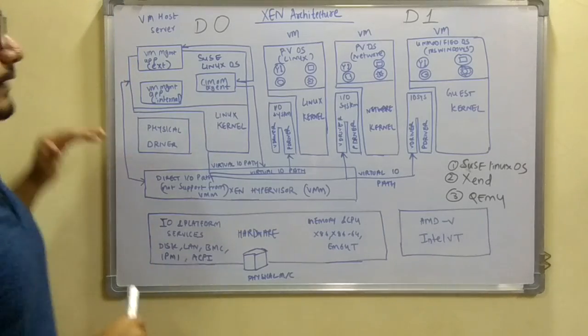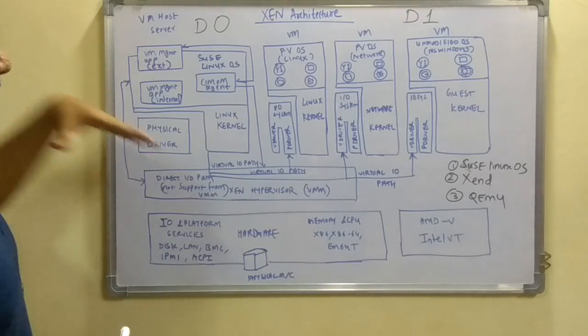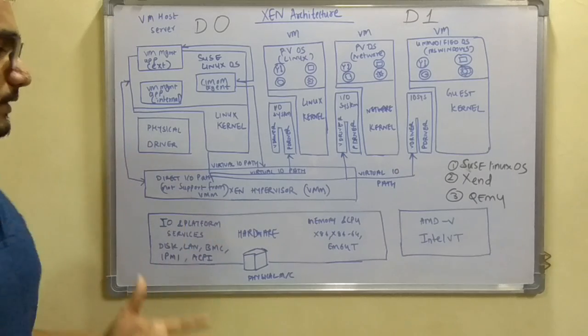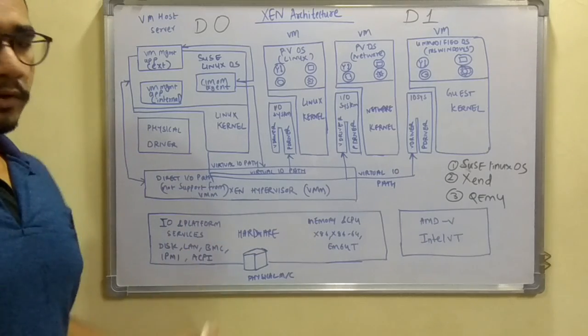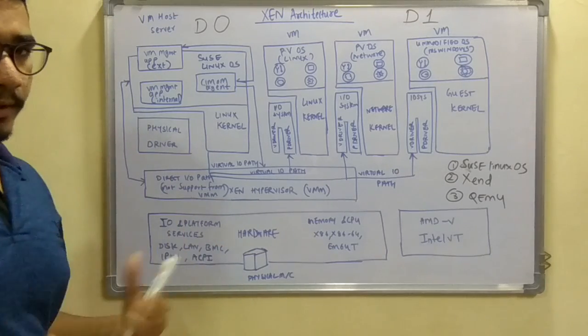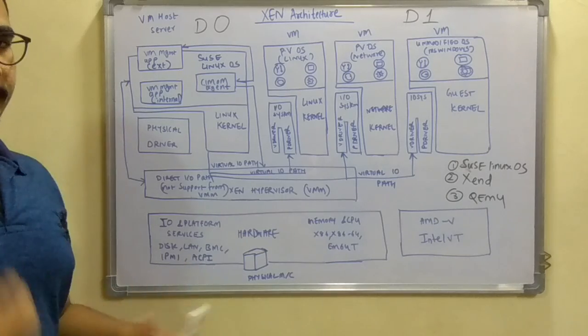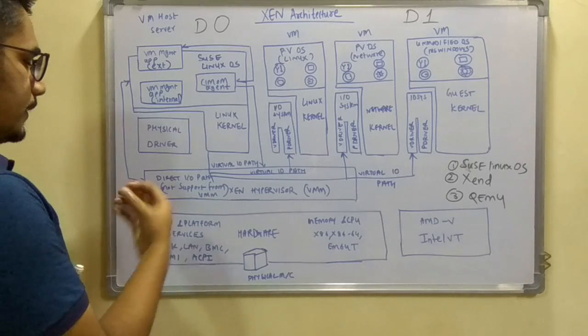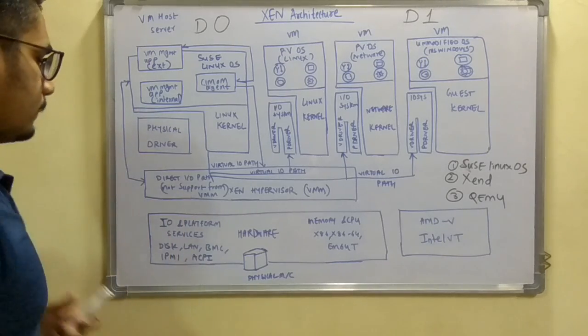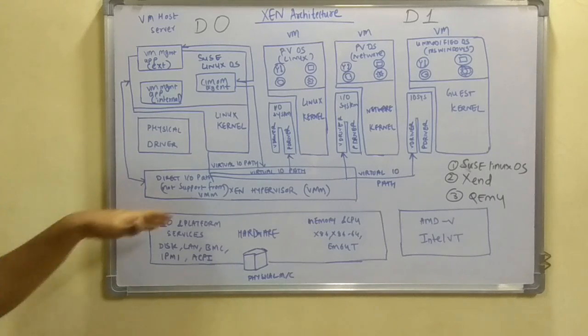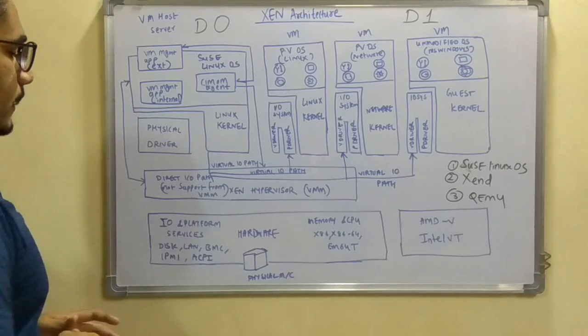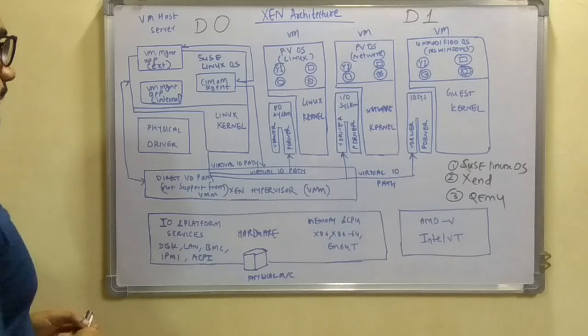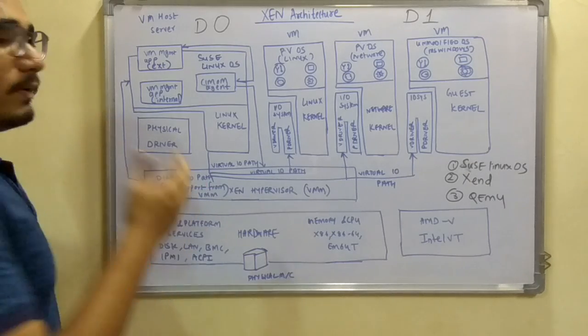That was all about the top-level sections. Next, moving down, we have the physical machine. This machine is not an ordinary one but has some kind of additional settings or plugins. For the I/O and platform services, you have mainly the disk for I/O read-write access, then the LAN, that is local area network.